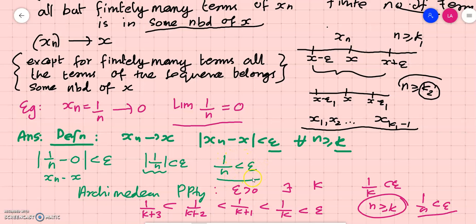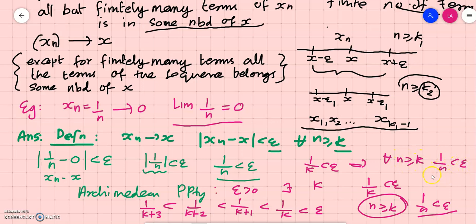For a given epsilon, I can always find a k such that 1/k is less than epsilon. From that, we can say that for all n greater than or equal to k, 1/n is less than epsilon. This is true because by the Archimedean property, we can always find such a natural number k such that 1/k is less than epsilon.